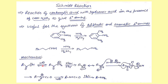The Schmidt reaction mechanism: under acid conditions, an acylium ion is formed (the slow step, similar to Friedel-Crafts acylation). Hydrazoic acid nitrogen attacks the acylium ion, and through a series of rearrangements, the desired amine is obtained. This concludes the discussion of nitrenes as reactive intermediates and the important related name reactions — Hofmann, Curtius, Lossen, and Schmidt rearrangements. If you have any confusion, please comment.